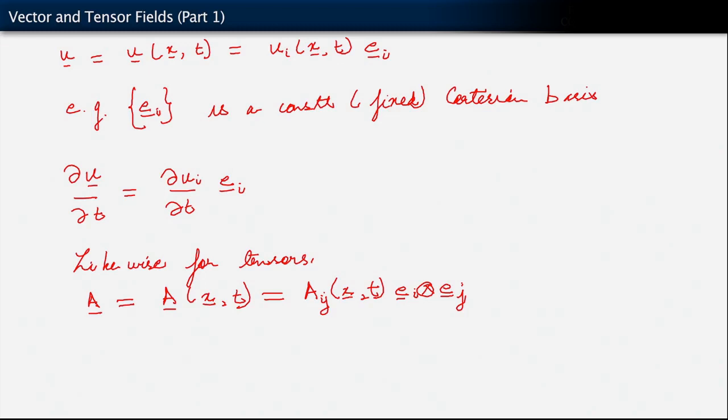And therefore, now, when we talk about the time derivative, it's clear how to do it. Since our basis vectors are fixed, the quantity that's varying here is always the components, the components of the vector u or of the tensor A. So this way of writing things out by saying that the basis stays fixed with respect to position and time allows us to define the time derivative in a very simple fashion. As you may imagine, the same thing carries over now to derivatives with respect to space.